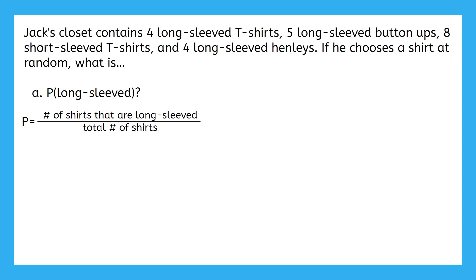How many total shirts are there? Four long-sleeved t-shirts, plus five long-sleeved button-ups, plus eight short-sleeved t-shirts, plus four long-sleeved Henleys make 21 total shirts. So we can put 21 as the denominator. Of those 21 shirts, how many of them are long-sleeved? Well, there are four long-sleeved t-shirts, five long-sleeved button-ups, and also four long-sleeved Henleys. If we add all those up, that makes 13 total long-sleeved shirts. So the probability of Jack picking a long-sleeved shirt is 13 out of 21.